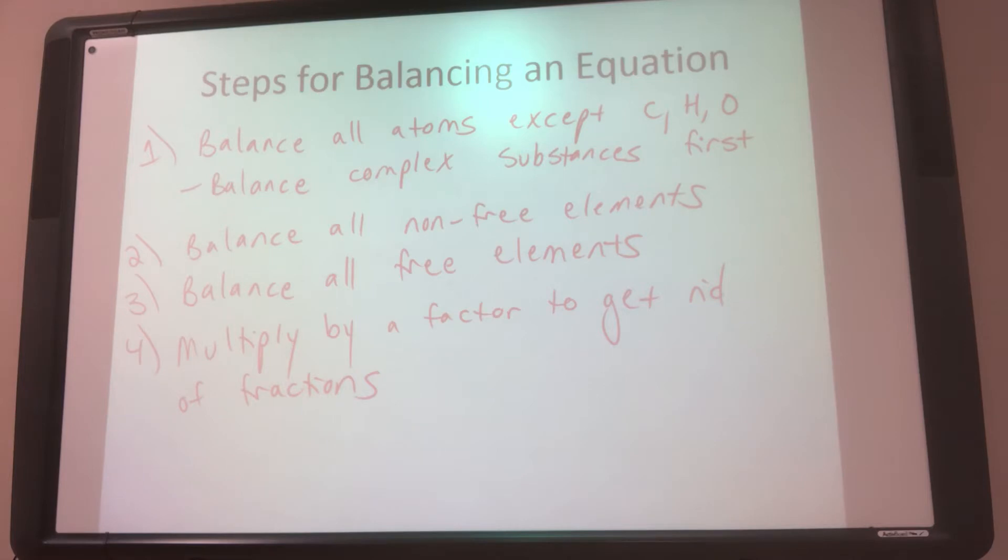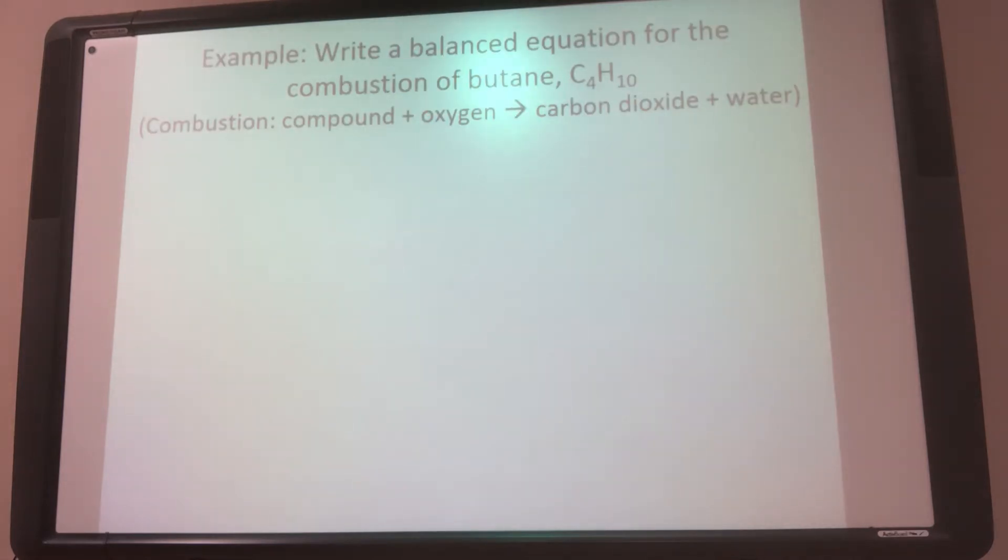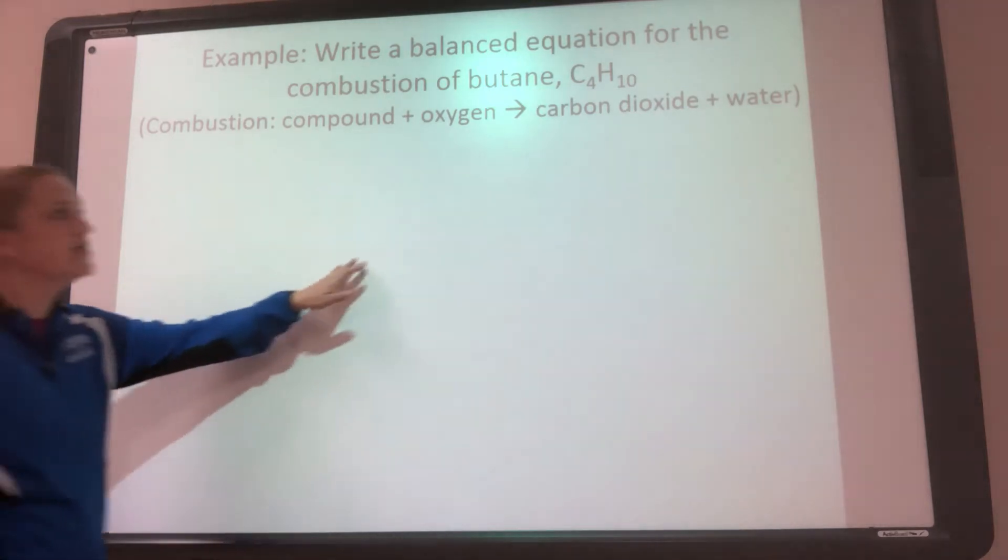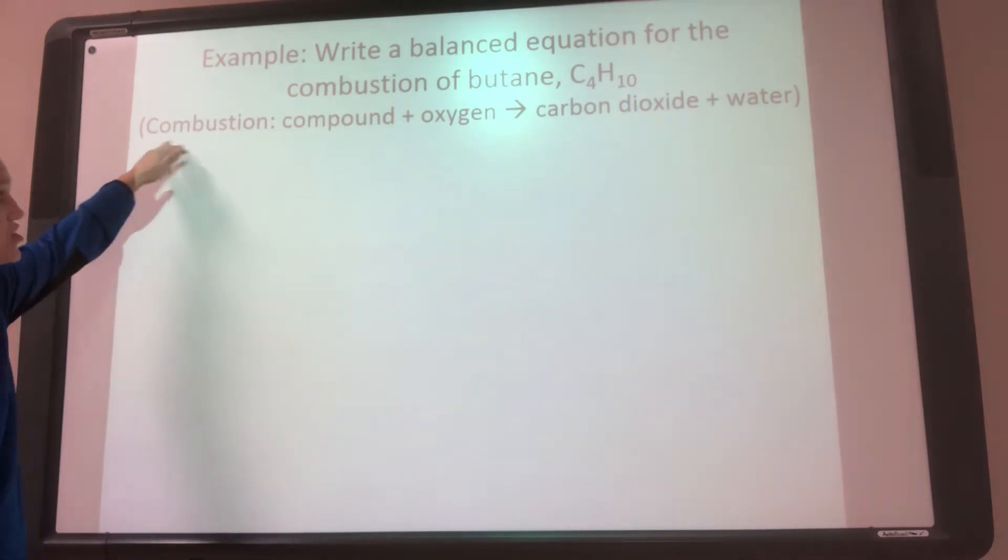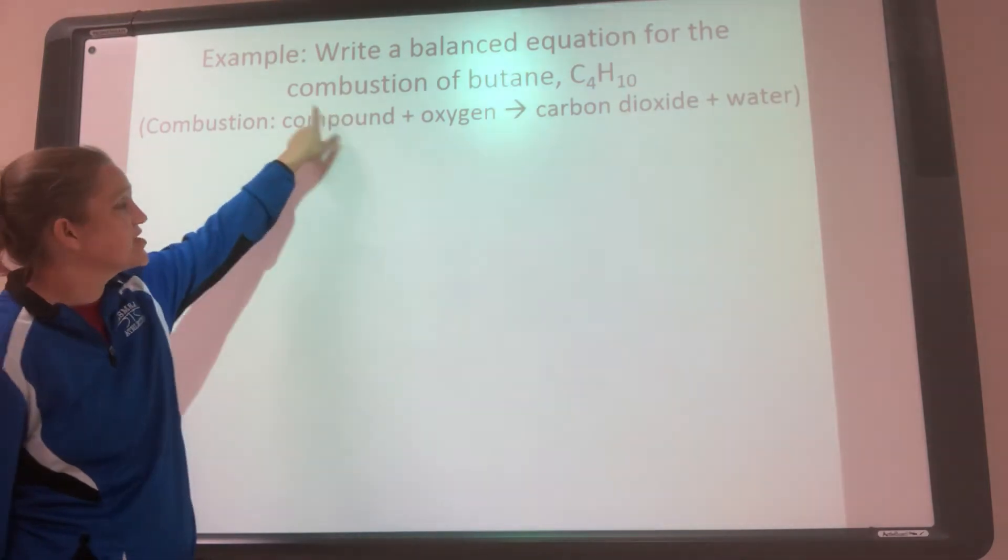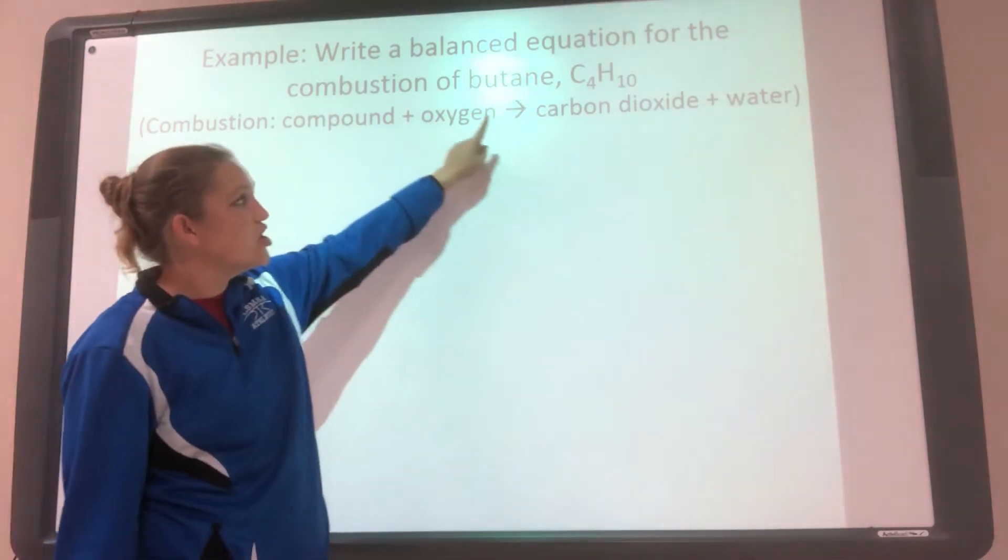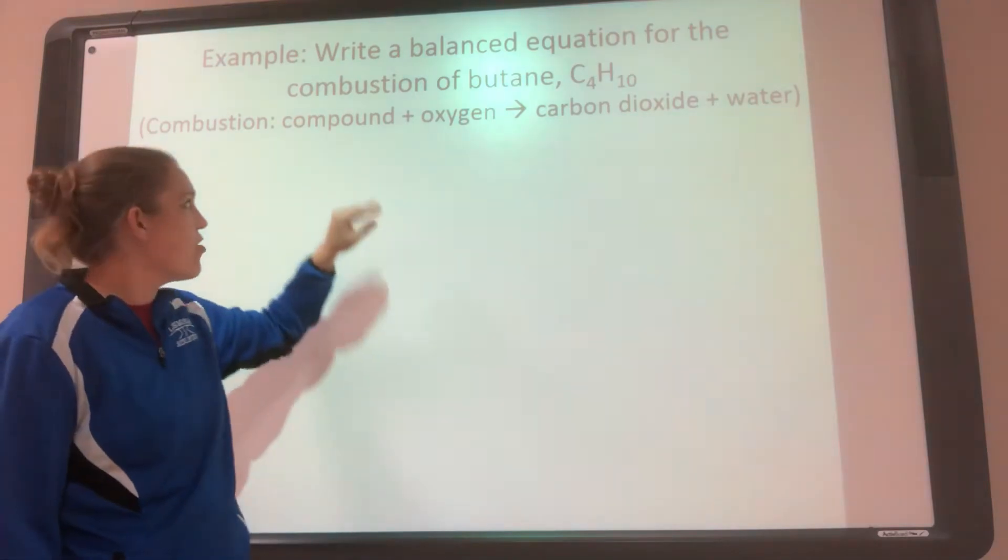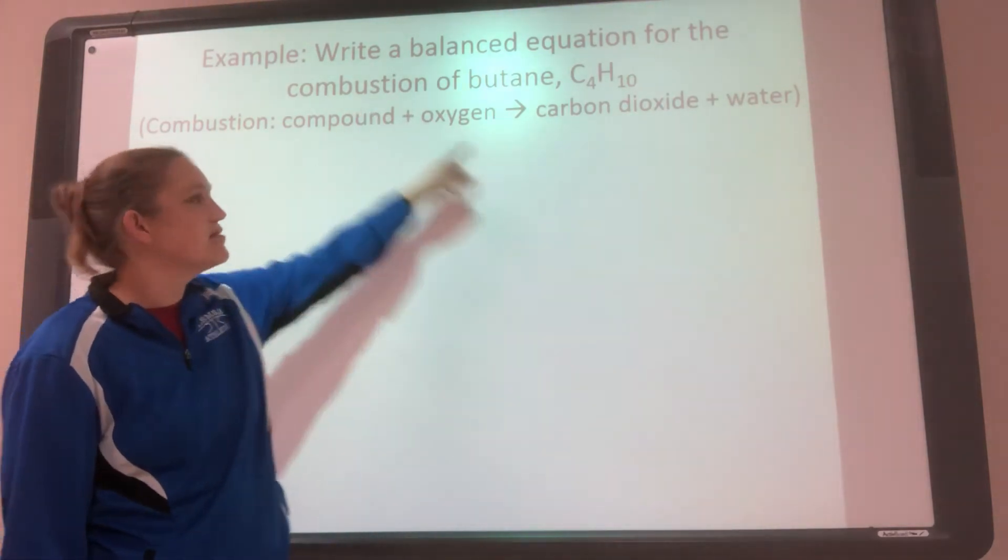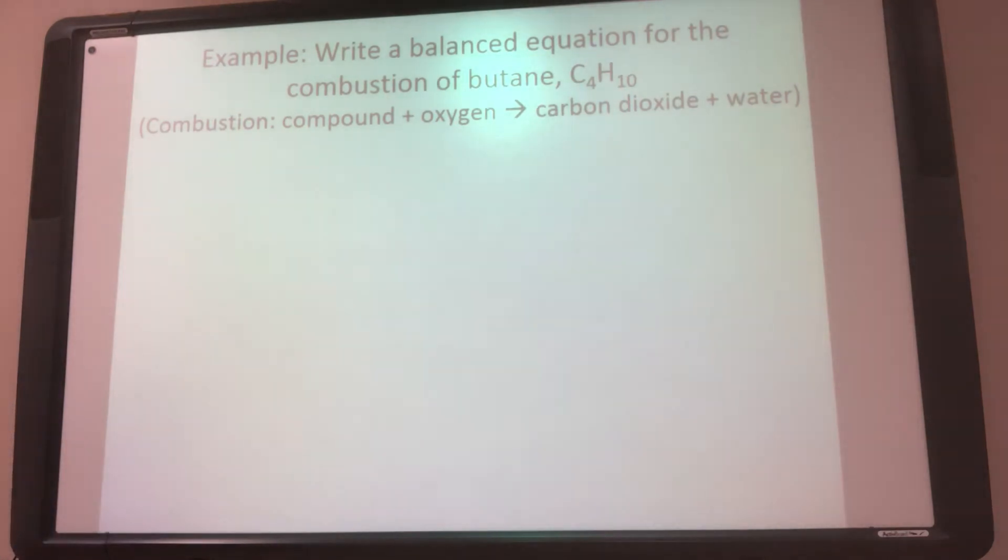All right. So let's do some practice because that's the best way to learn. So write a balanced equation for the combustion of butane. And so I told you what butane is, C4H10. And since we haven't talked about combustion, I tell you what combustion is in this problem. So it is whatever the compound is that's being combusted, in this case butane, plus oxygen goes to carbon dioxide and water. In this problem, I'm not worried about the states. I'm really worried about what is the actual compounds reacting and their coefficients. All right. So the first thing is write the compound down. And you always want to leave space in front so that you can write your coefficients.